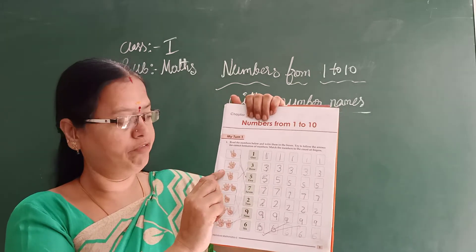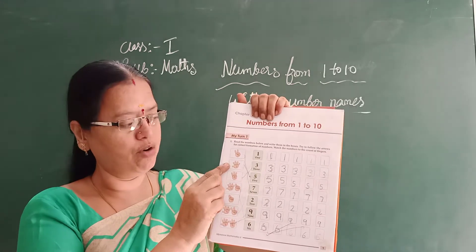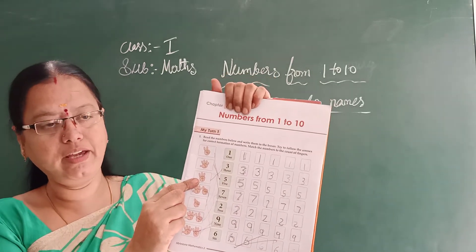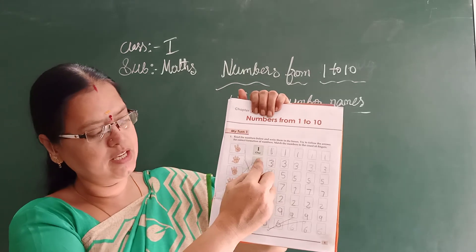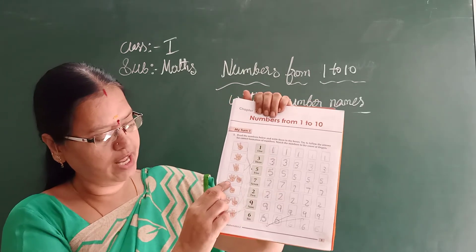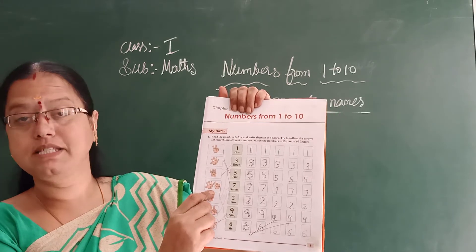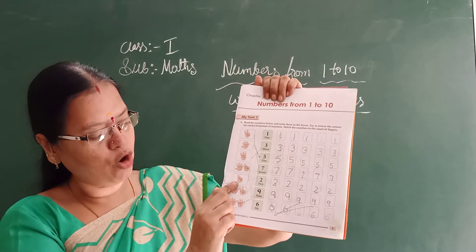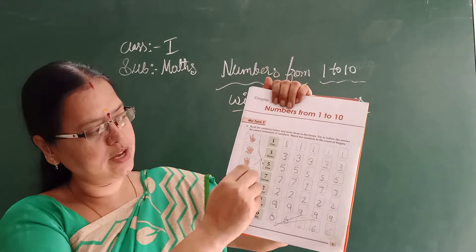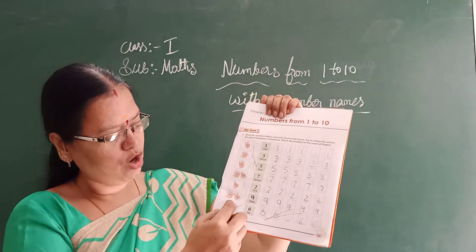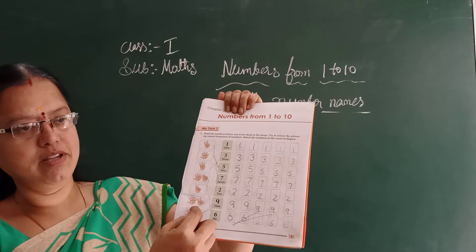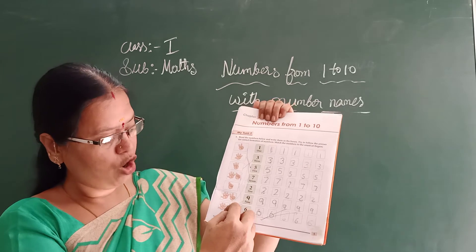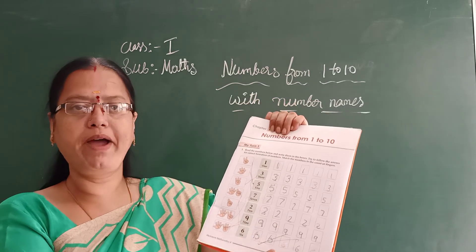What is the next picture? 5. So you have to match 5 with the number and number name. What is the next one? 3. Where is the 3? Here is the 3, so you have to match. Next — how many fingers are there? 6 fingers. Here is 6. And how many fingers? 1. Here is 1. And how many fingers? 7. You have to match 7 with the number name. And how many are there? 9. You have to match 9.